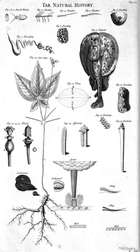Natural history museums, which evolved from cabinets of curiosities, played an important role in the emergence of professional biological disciplines and research programs. Particularly in the 19th century, scientists began to use their natural history collections as teaching tools for advanced students and the basis for their own morphological research.